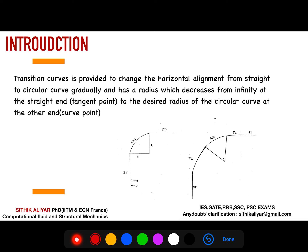So what do you mean by transition curve? So far we have studied straight roads. In straight roads, the radius will be infinite because for a straight line the radius is infinite. And there is no requirement of super-elevation in straight roads, because super-elevation is required only when there is overturning due to centrifugal force.